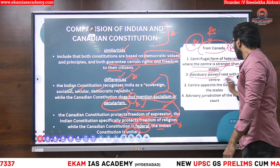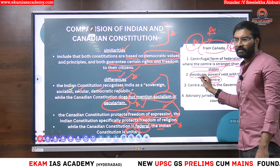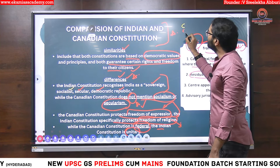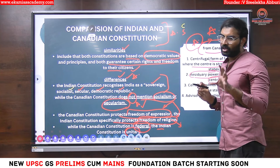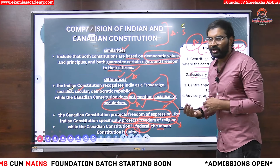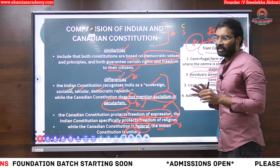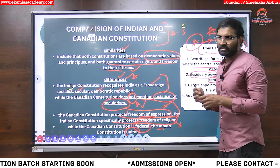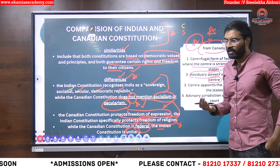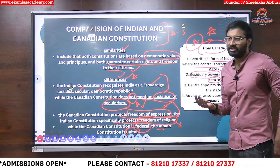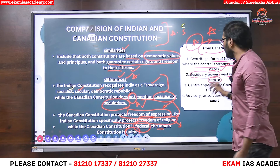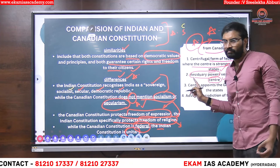Next, residuary powers — with whom do they rest? Generally, there is a central list, a state list, a concurrent list, and a residuary list. For example, cryptocurrency was not mentioned in any of these lists — it is a recent emerging trend. So it comes under the residuary list and can be dealt with by the center itself. This feature was taken from the Canadian government.